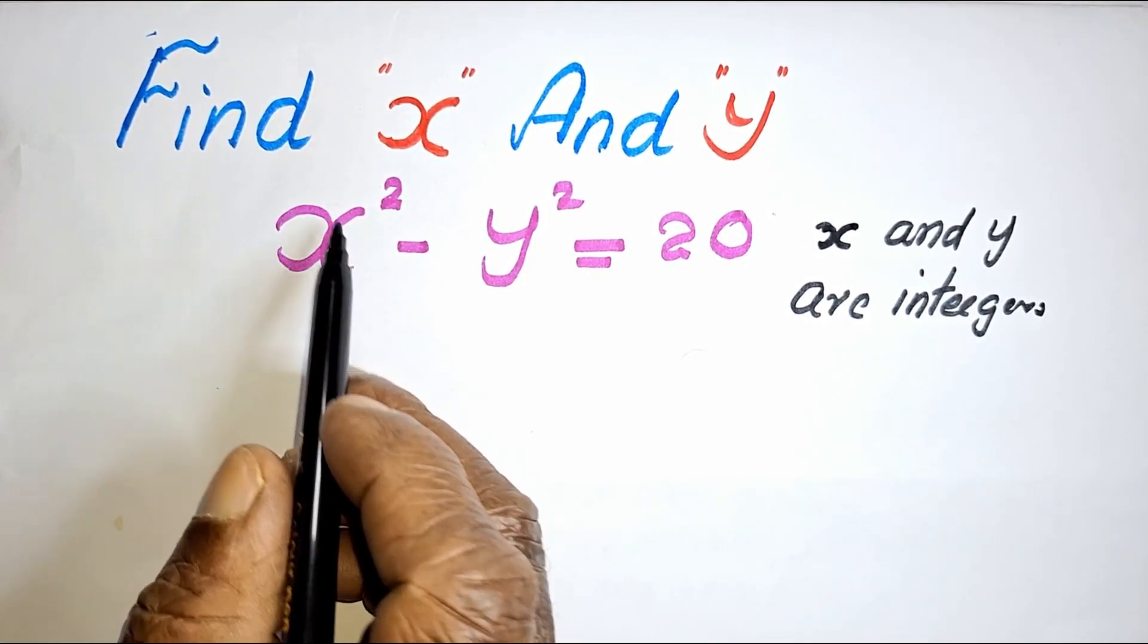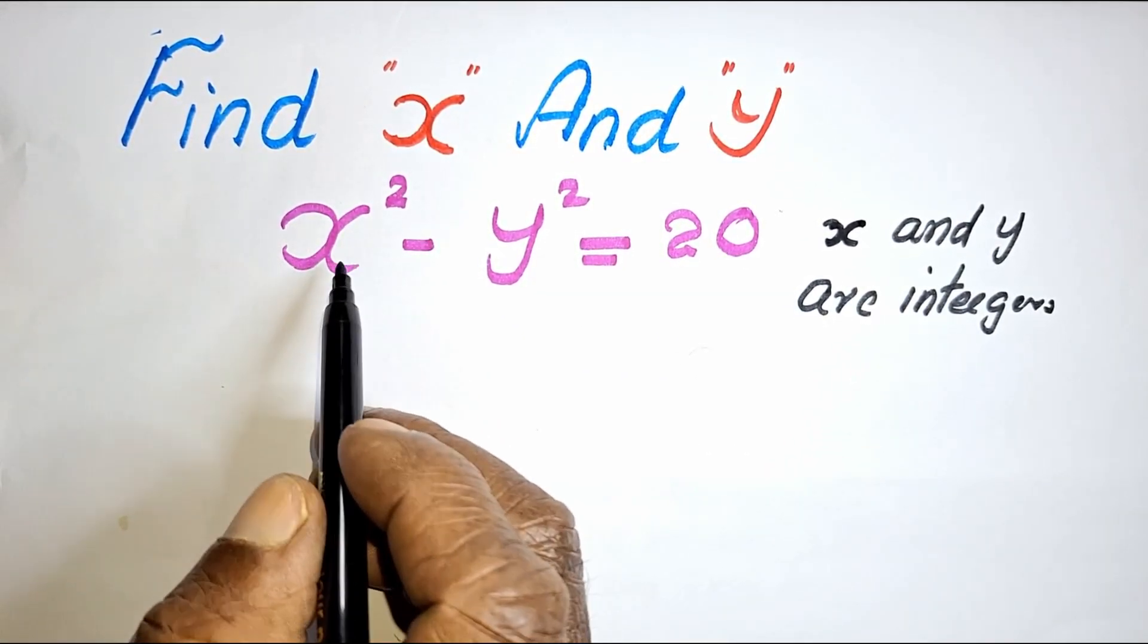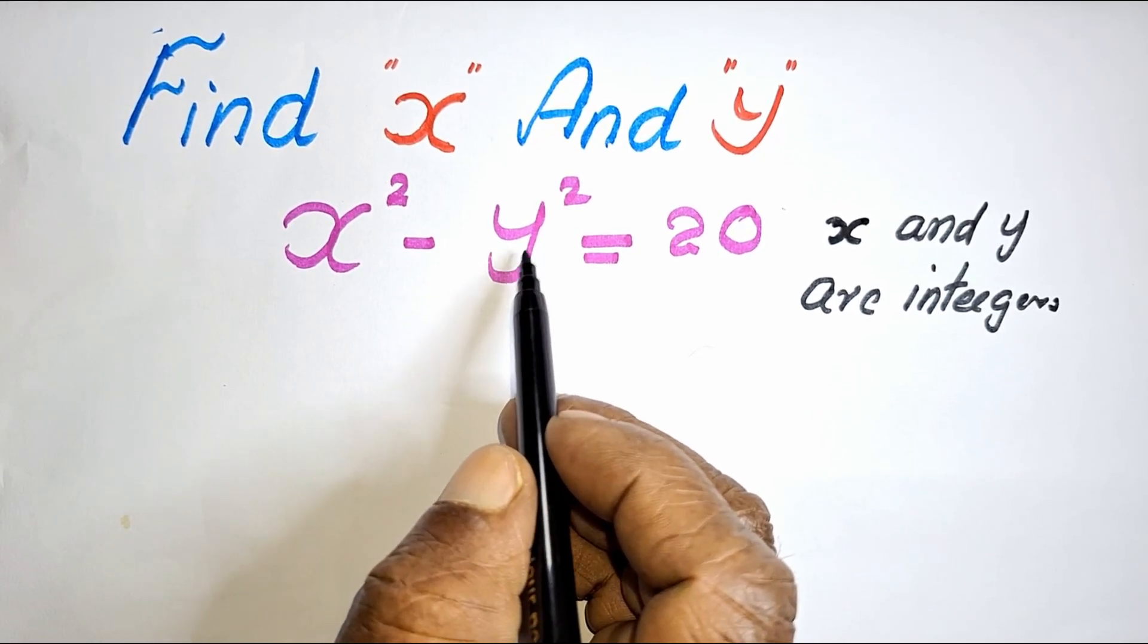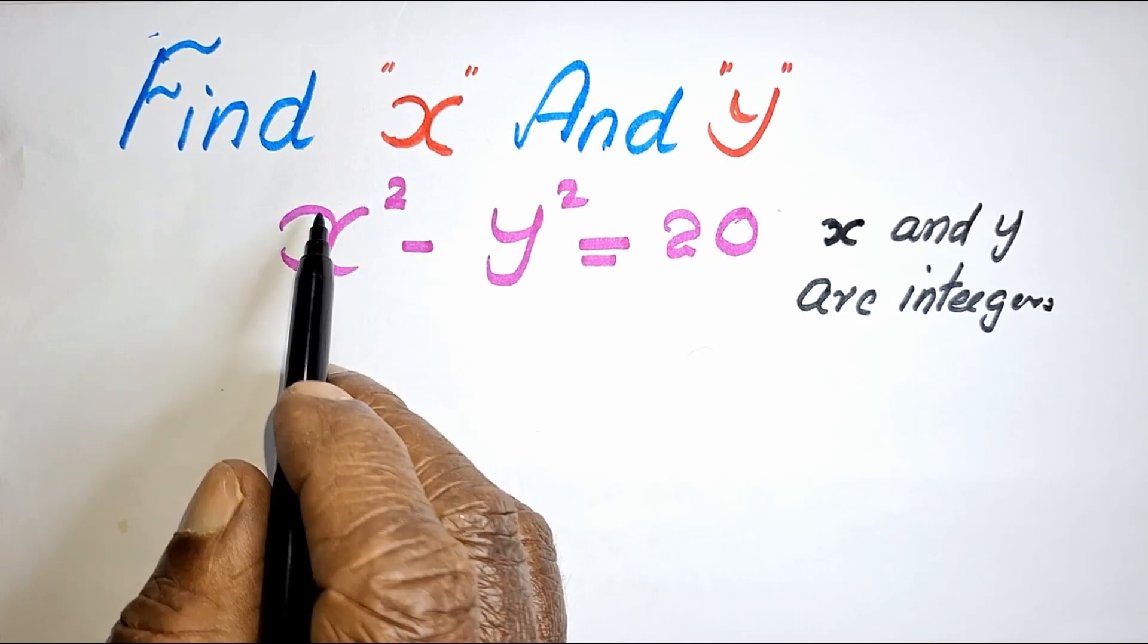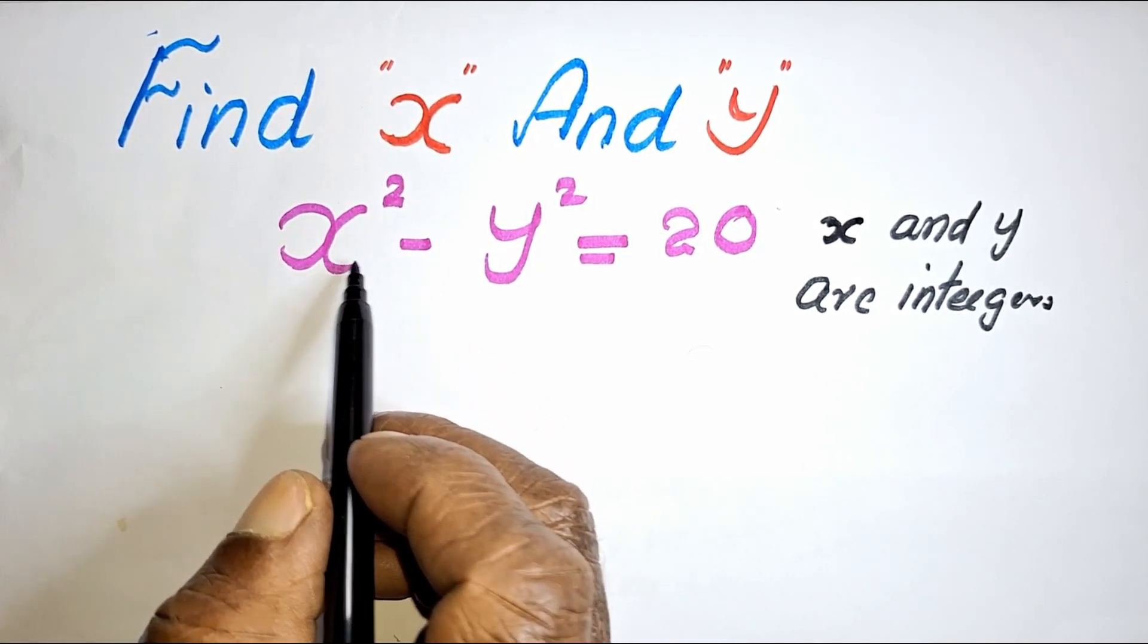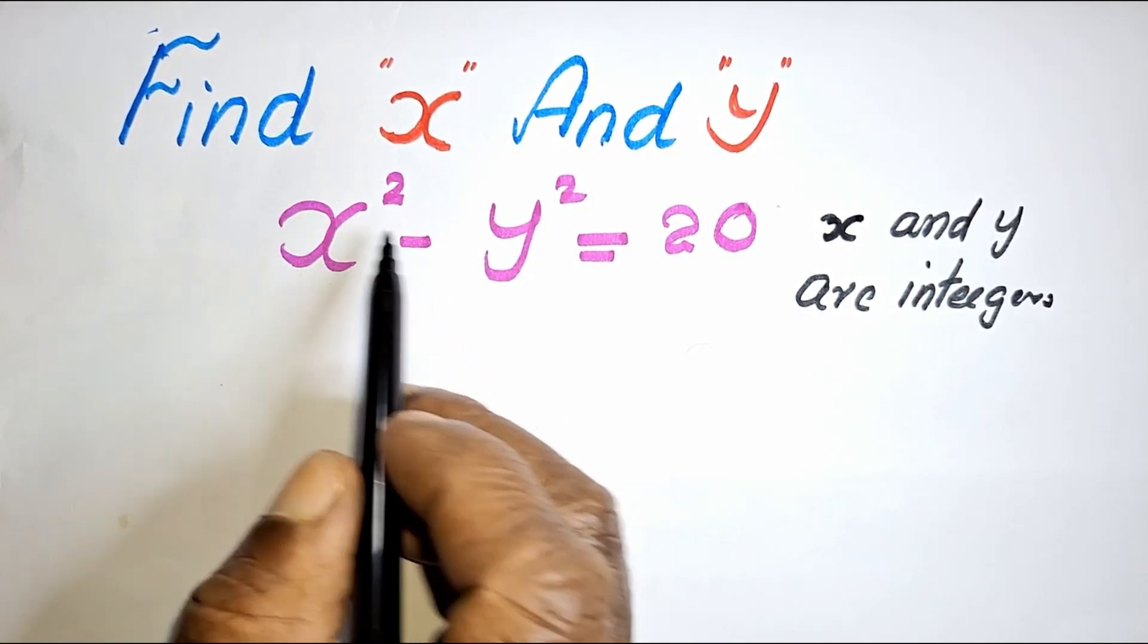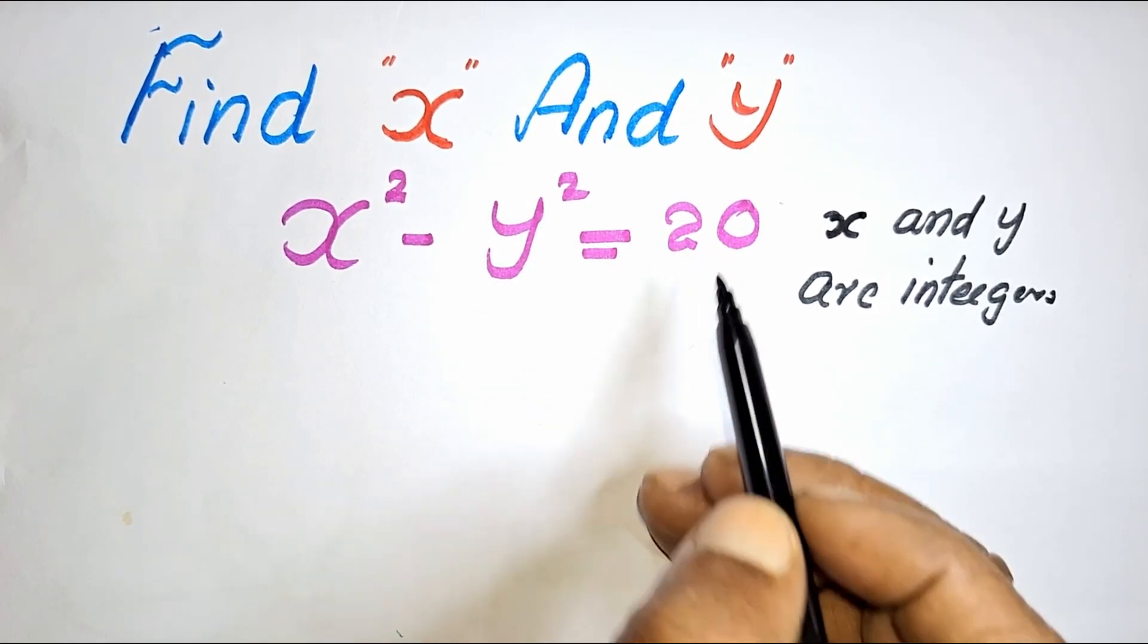If X is an integer, X squared is a square number. And Y also is an integer, so Y squared is a square number. Now that means the difference of two square numbers is 20 here.